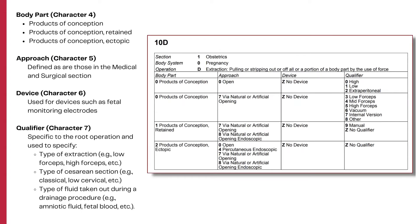The fourth character identifies the products of conception. There are three variations: one is a viable pregnancy, the second is a displaced or ectopic pregnancy, and the third is a non-viable pregnancy such as spontaneous or missed abortions and postpartum retention of products. The fifth character approach values are similar to the medical and surgical section. The sixth character is used for devices such as fetal monitoring electrode placements, and the seventh character qualifier is used to specify the type of extraction, the type of C-section, or the type of fluid removed from drainage procedures.